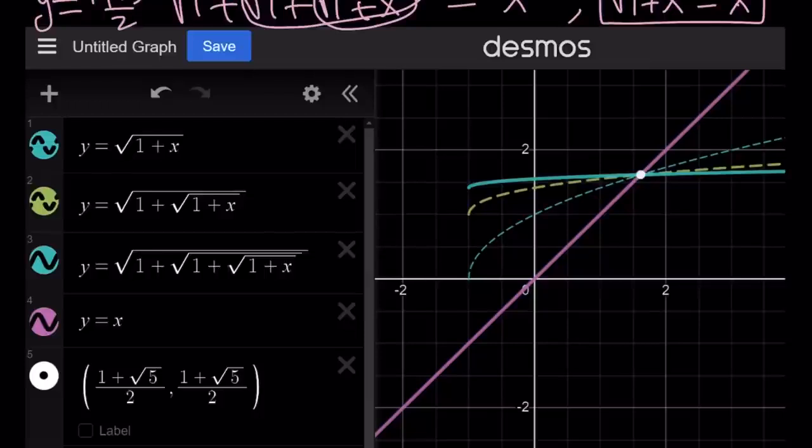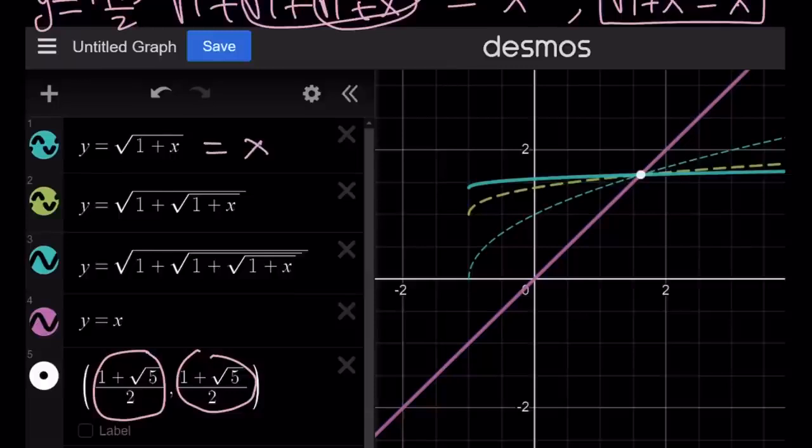And notice that they all pass through the same point, which is 1 plus root 5 over 2, comma, 1 plus root 5 over 2. And since x and y values are equal, they're also on the line y equals x. Y is y equal to x, because remember, the square root of 1 plus x is equal to x, and that means y equals x.